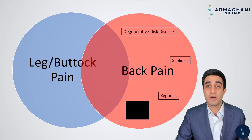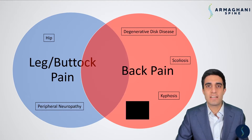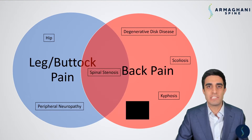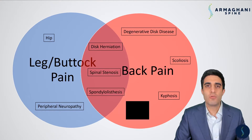Different conditions that can cause purely leg and buttock pain can involve conditions of the hip such as arthritis or peripheral neuropathies. But there are some conditions that can cause back pain as well as leg and buttock pain to certain degrees. Those conditions of the spine include spinal stenosis, lumbar spondylolisthesis, as well as disc herniations. Today though we'll be discussing lumbar spondylolisthesis.